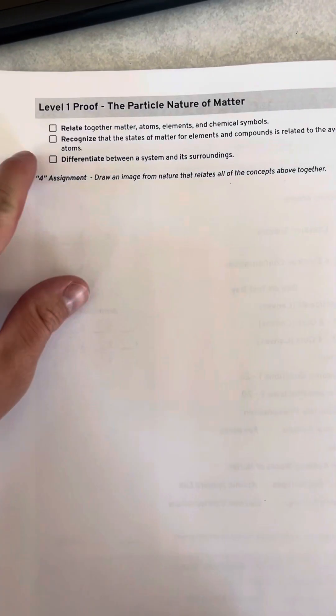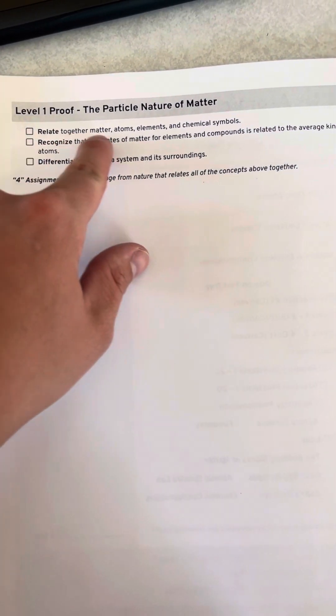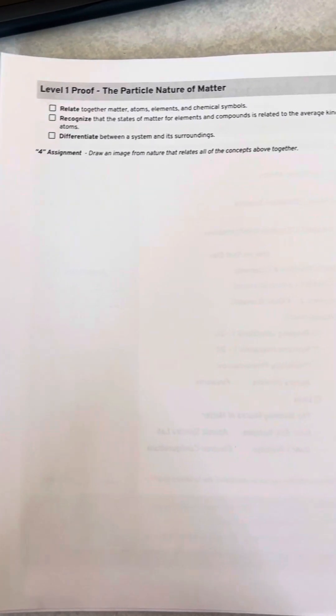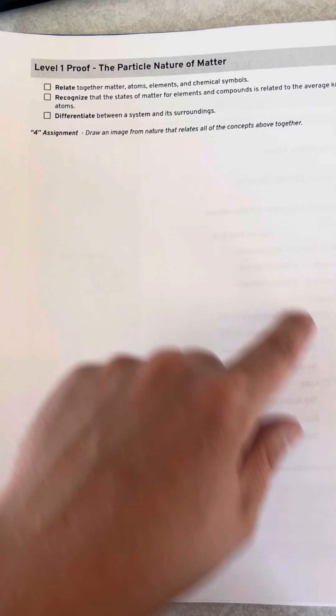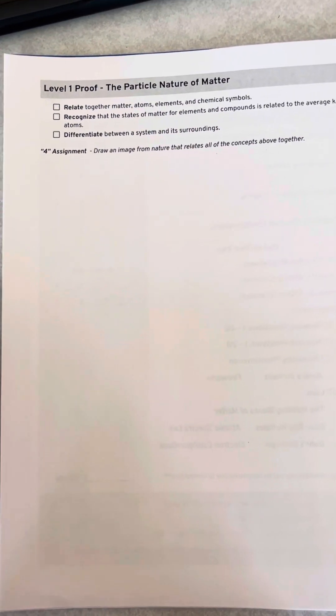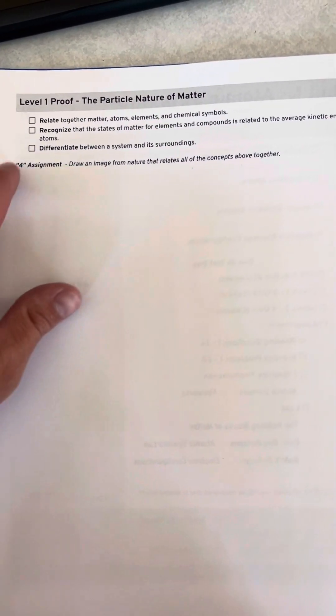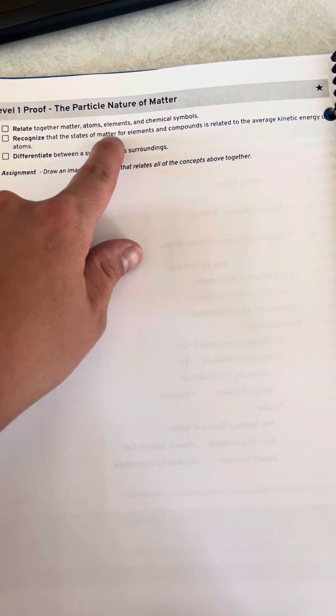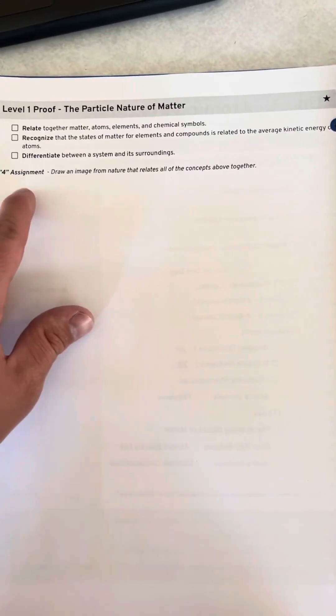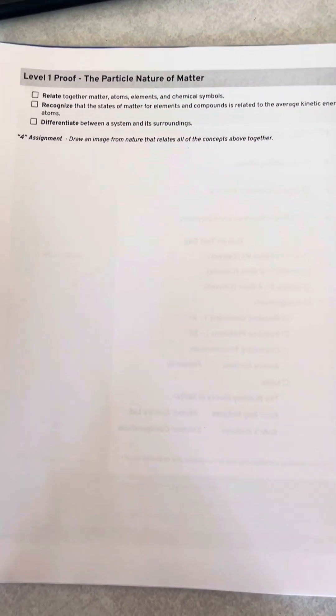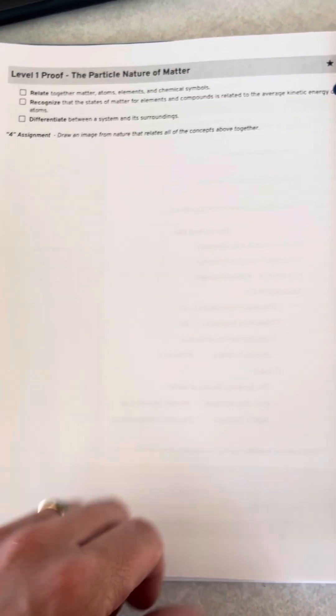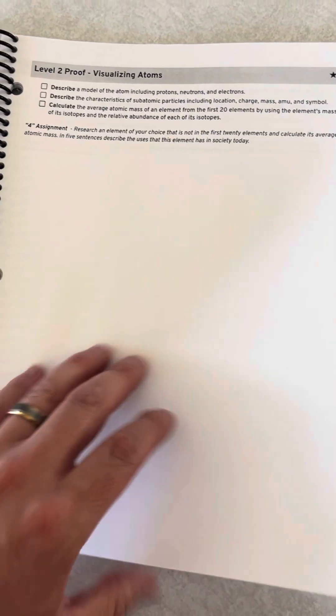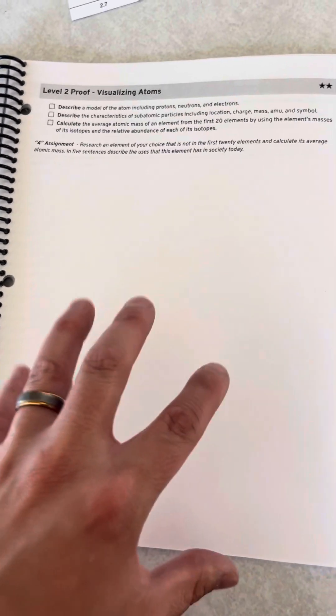But I care about is how well do they understand the particle nature of matter? And then the standards, the things that I really care about are can they relate together matter, atoms, elements, and chemical symbols? In our notes, there is a little section where I talk about and relate all of them. They can literally draw the same picture that I drew from their notes. So the notes is a great guide for them for some of these things. They can recognize the states of matter for elements and compounds is related to the average kinetic energy of atoms. So they can simply find an example on the internet or come up with their own to describe that concept. And so they're going to draw it out.